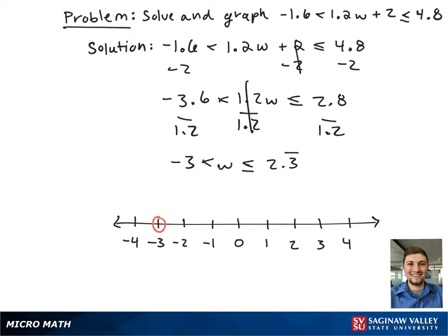On the number line, this looks like an open circle from negative 3 to 2.3 repeating with a closed circle.